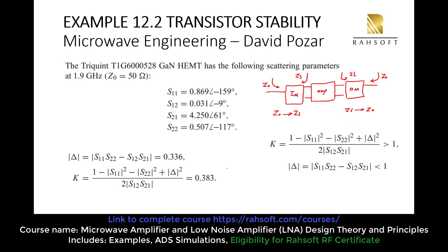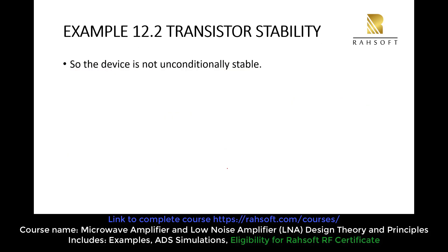In our first step, delta is less than 1, but K is not greater than 1 — so we fail here. It means that our amplifier is not unconditionally stable. We have to move on to conditional stability, because the amplifier is not going to be stable for all impedances. We need to find, using the Smith chart, for which impedances this amplifier will be stable — and since we are in that region, we are dealing with conditional stability.